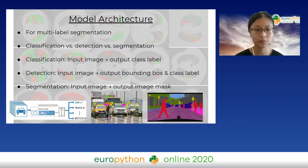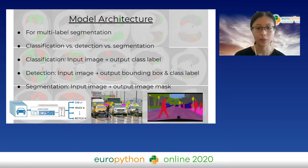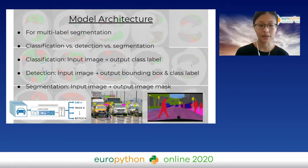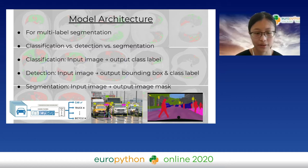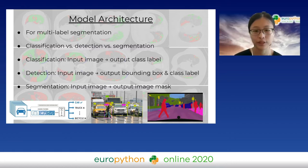In classification, normally considered the most easy — given an input image, you output a single scalar label representing the class of the object. For example, if I had an image of a car, you would output the number five, which corresponds to the class 'car'. For detection, you're not only concerned about the scalar label but also about some degree of location information. You have to identify the boundaries of the object of interest so that you can output a bounding box around the object.